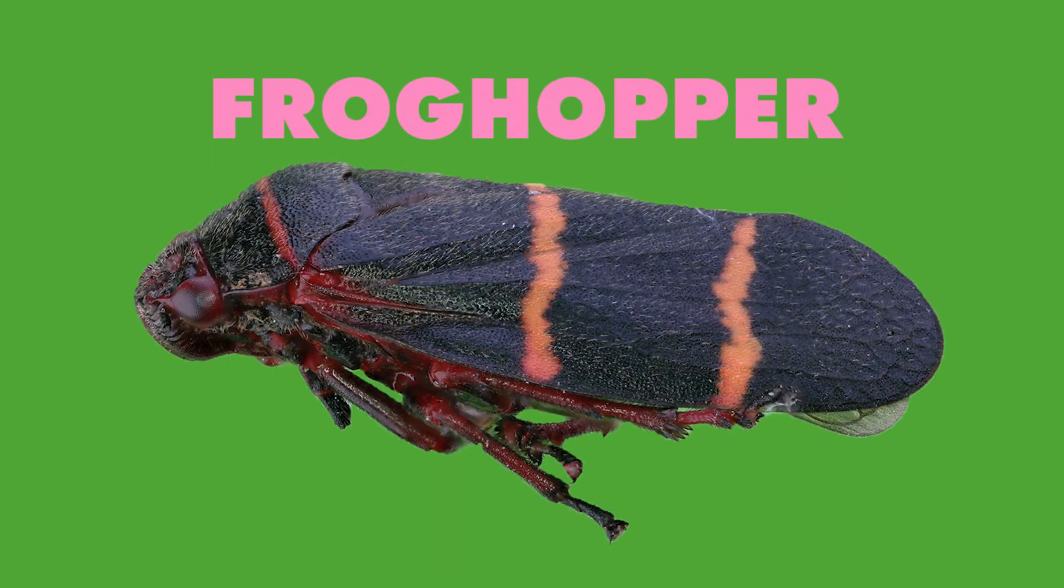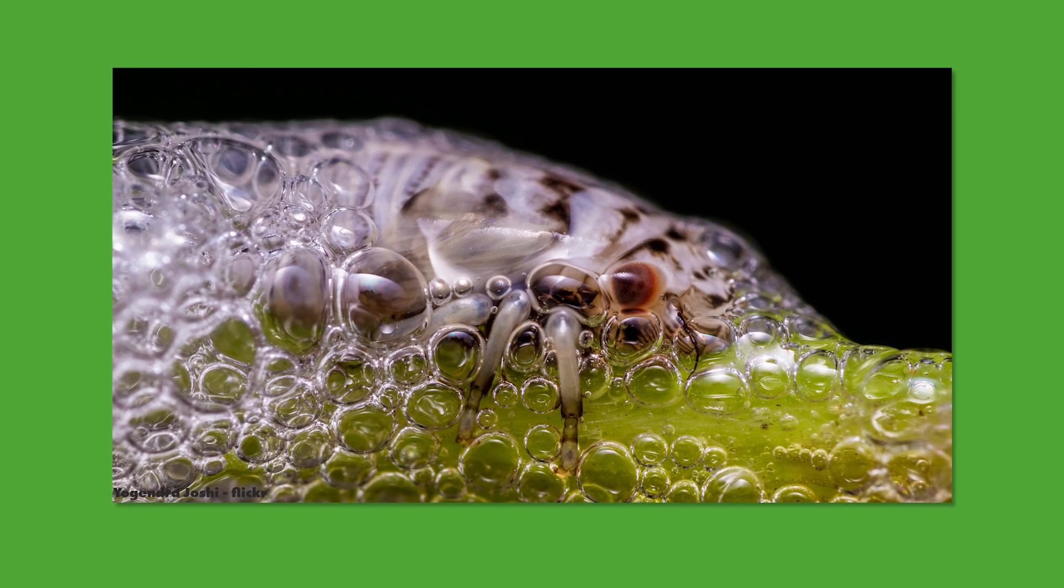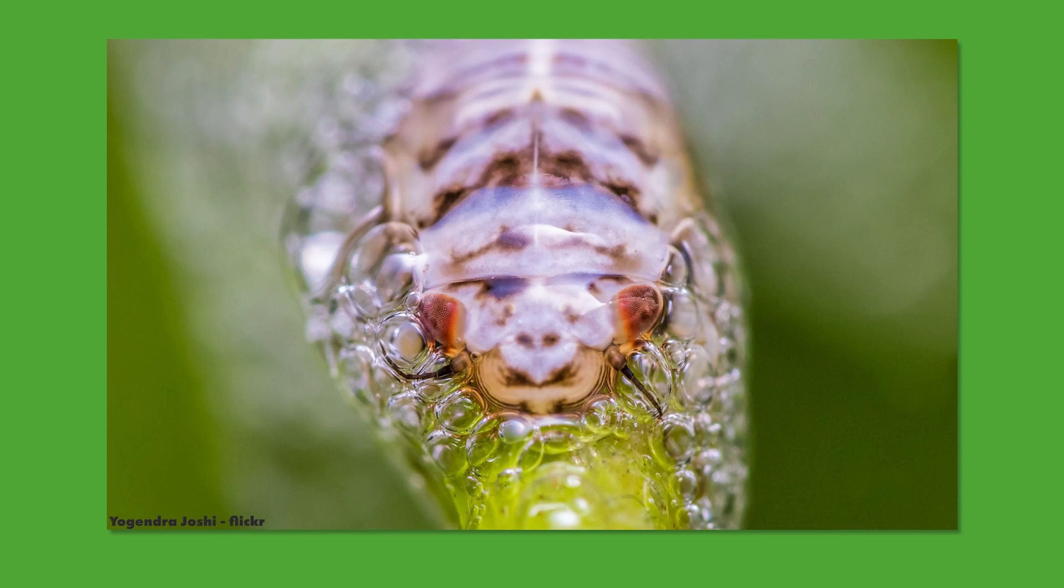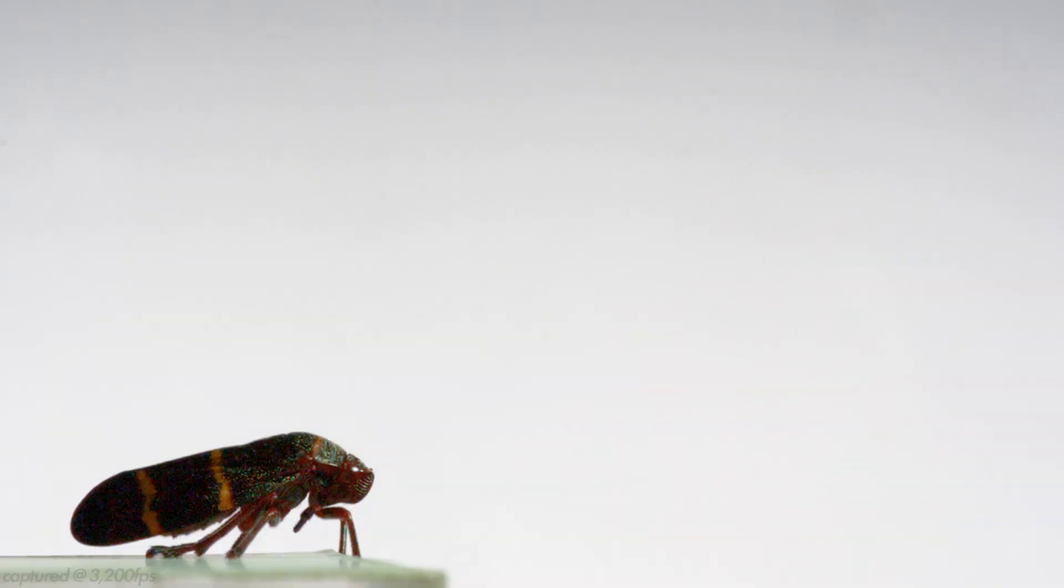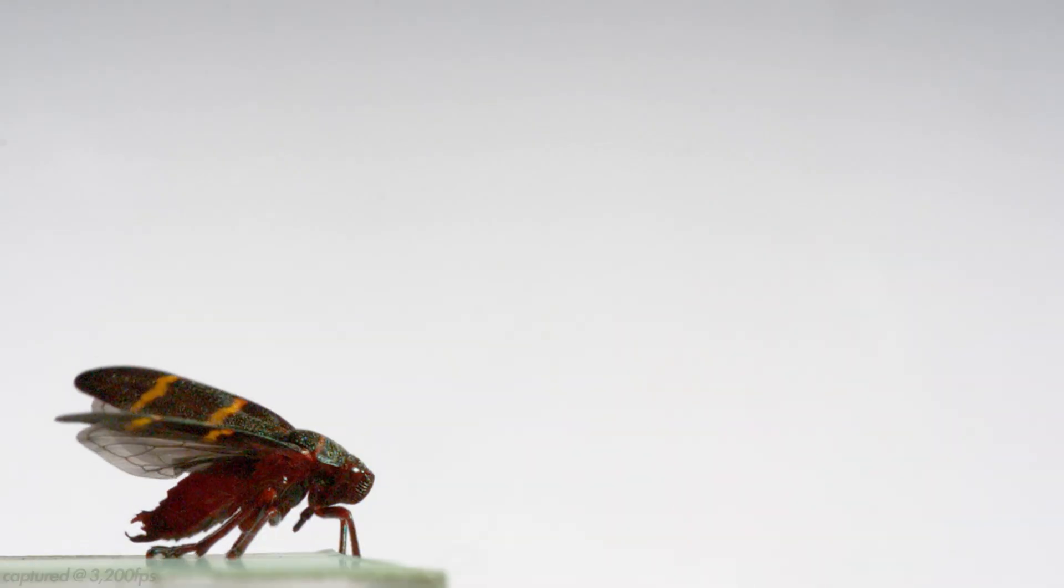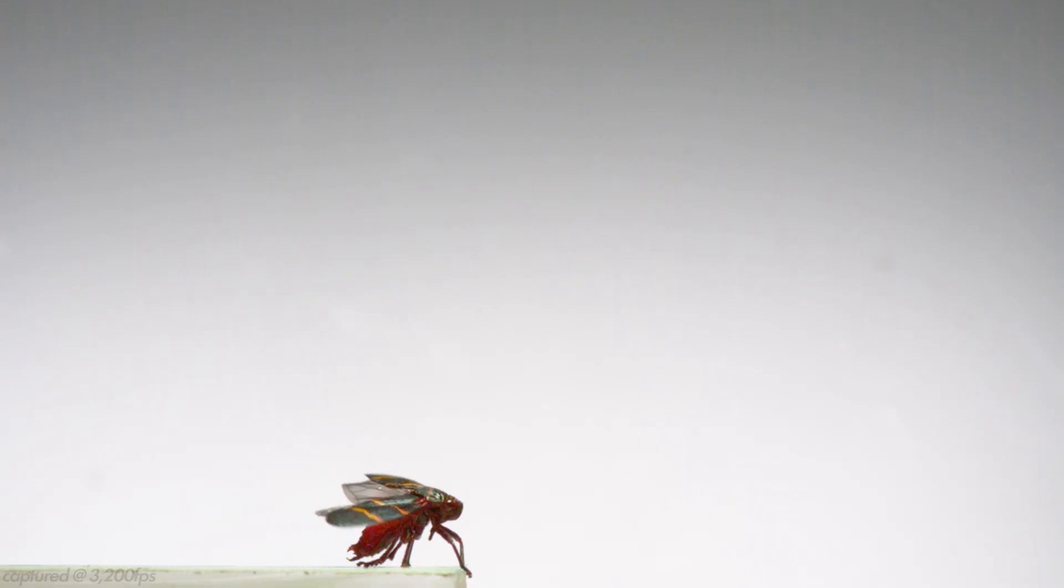The last are froghoppers, which are also known as spittlebugs. The spittlebug name comes from the ability of the nymphs to turn their sap excrement into a frothy, protective mass of spittle. Some froghoppers are among the fastest jumping insects ever recorded, accelerating at an astounding 5,400 meters per second squared, which is just under 550 G-force.